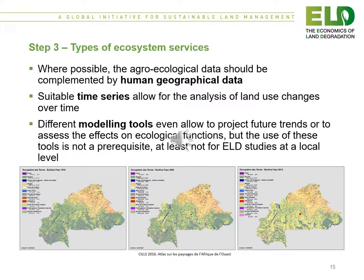Step three is the characterization of the types of ecosystem services. Where possible, the agroecological data should be complemented by human geographical data. Suitable time series will allow for the analysis of land use changes over time, and these changes will feed into step five. Different modeling tools allow projecting future trends or assessing effects on ecological functions, though their use is not a prerequisite, at least not for ELD studies at a local level.